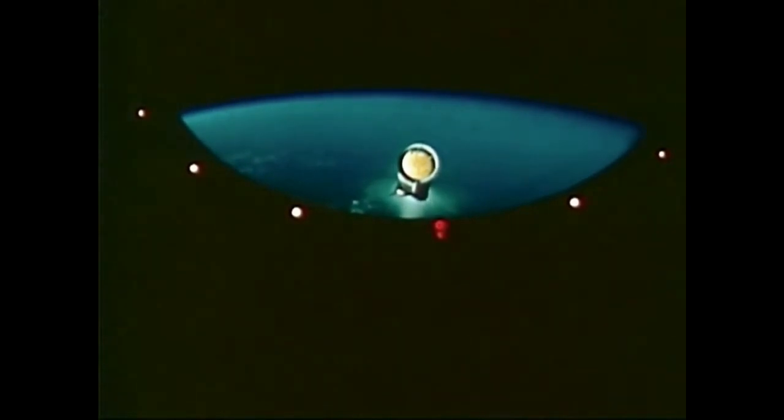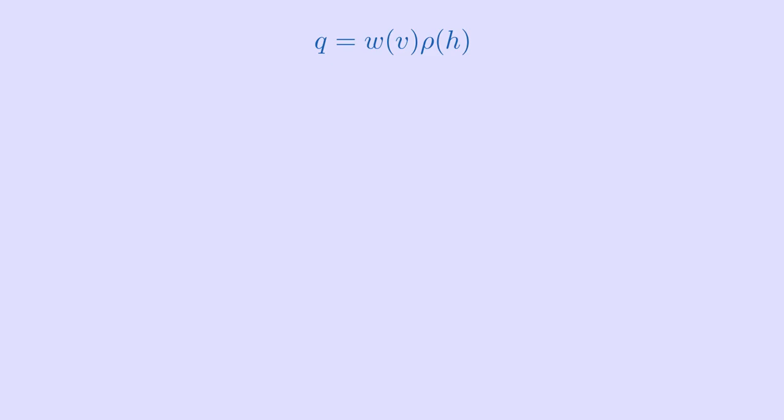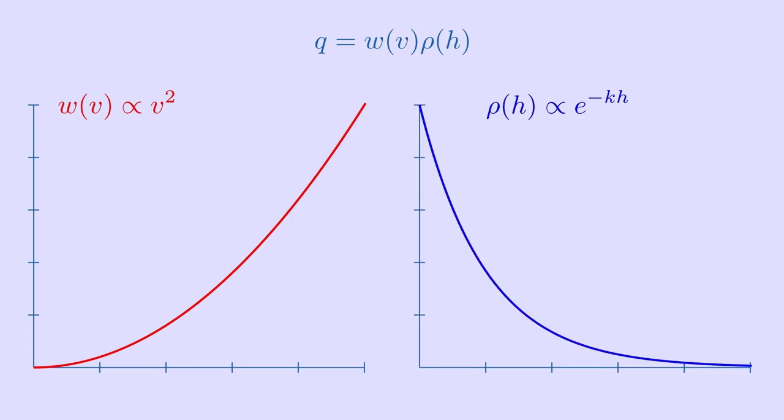But why, then, is there a max Q? Dynamic pressure itself is calculated from two terms, one of which is proportional to the square of the speed, and one of which is proportional to the atmospheric density. This density itself is an exponentially decaying function of altitude.